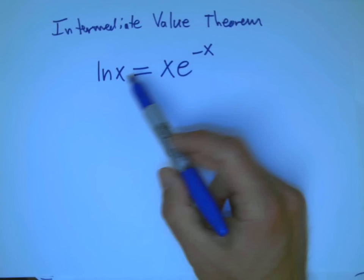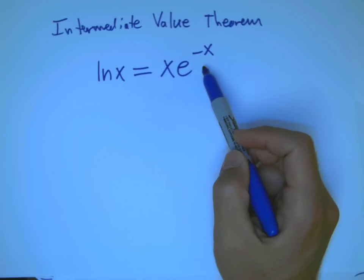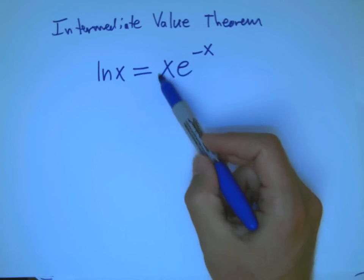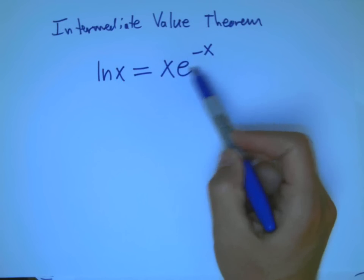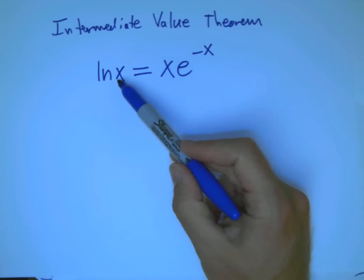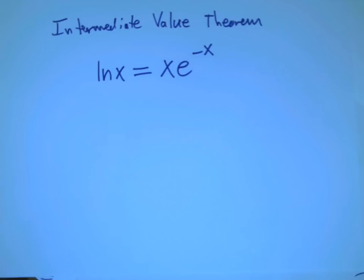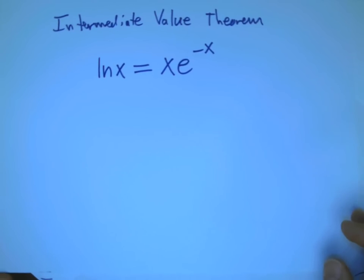Well, the most important thing to start with is you can't use algebra to do this. When you have an x that's outside an e and inside an e like this, unless it's a very specific kind of special form, you can't use any kind of algebra to solve that. You can prove that the algebra is in fact useless for this problem.